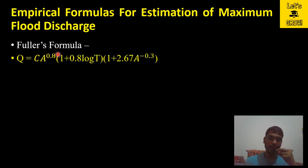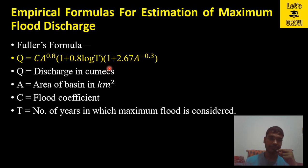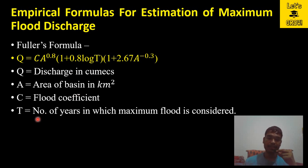The next formula is Fuller's formula. As per this formula, Q = C × A^0.8 × (1 + 0.8 log T) × (1 + 2.67 × A^(-0.3)), where Q is the discharge in cubic meters per second, A is the area of basin in square kilometers, C is the flood coefficient, and T is the number of years for which the maximum flood is considered.